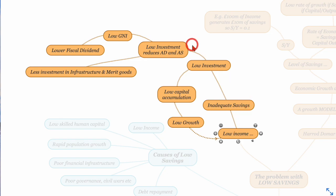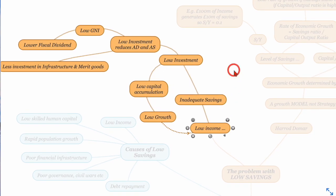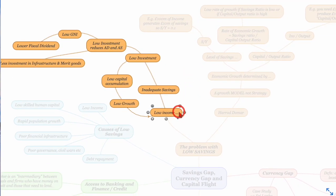But it is important when you're writing about that that you also say low investment means that you have low levels of aggregate demand, aggregate supply particularly, lower levels therefore of GNI part of the HDI index and low fiscal dividend so you can't tax these low incomes very much and so therefore there's less investment in infrastructure and merit goods. So you can see this vicious circle really of low incomes leading to low savings but then that just gets reinforced year after year after year.